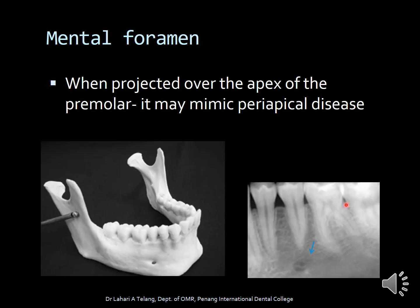The mental foramen is an important landmark — this is where the inferior alveolar canal exits. When projected over the apex of the premolar region, it may mimic periapical disease. It is therefore important to note that the mental foramen is located somewhere between the premolars and is sometimes in very close proximity to the apex of the premolar in the mandibular premolar region.